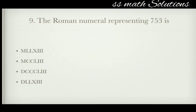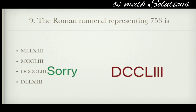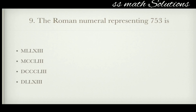The Roman numeral representing 753. We separate it as 500 plus 200 plus 50 plus 3. For 500 we write D, for 200 we write CC, for 50 we write L, and for 3 we write III. So the answer is option C: DCCLIII.